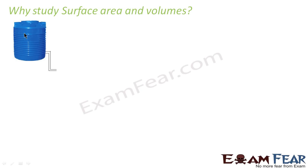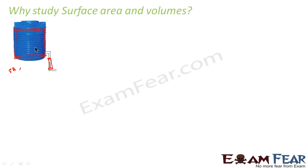This tank is cylindrical in shape. The pipes you see are also cylindrical. If you are asked to find the volume of the tank or its surface area — for example, if you want to coat it with paint and need to know how many liters of paint are required — you find the surface area. If you want to know how much water it can hold, you find the volume.